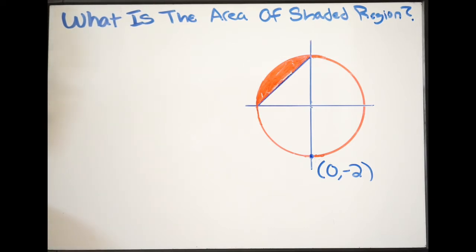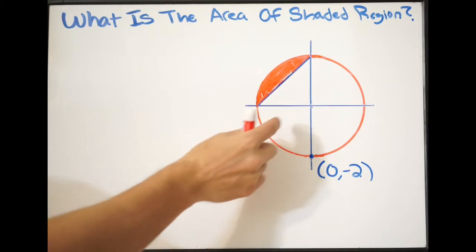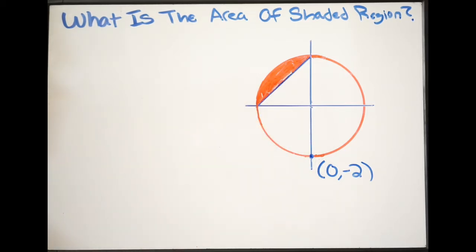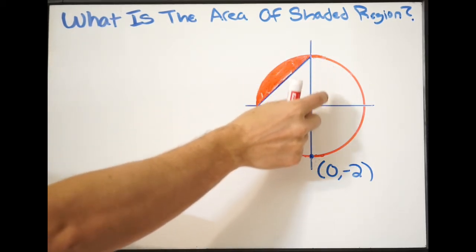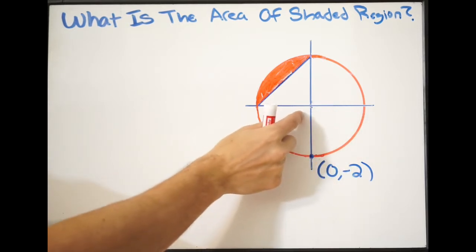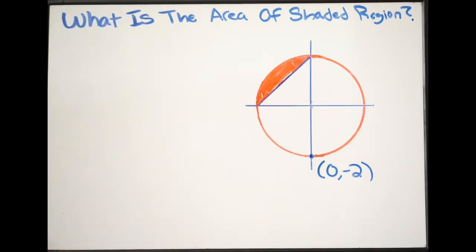And that's all we need, because we know that if this is 0, negative 2, that means that our radius must be 2 here. So our radius here is 2, 2, 2, and 2. So we have a radius of 2.